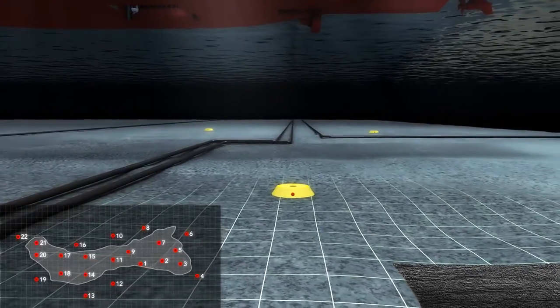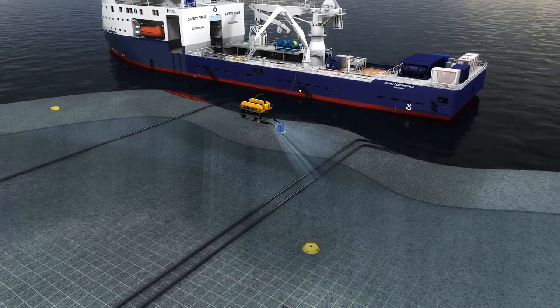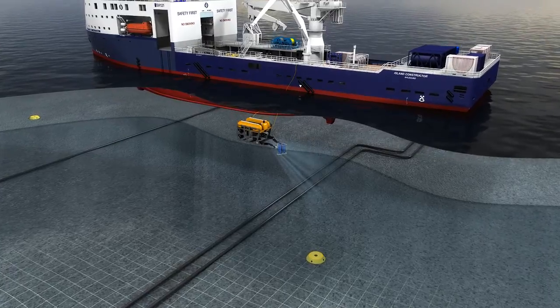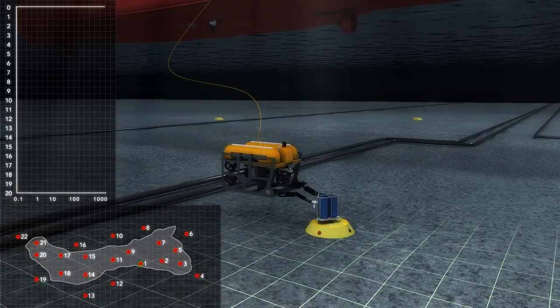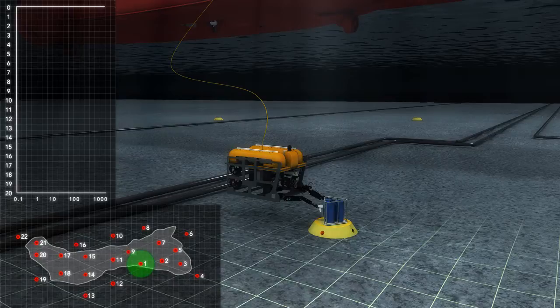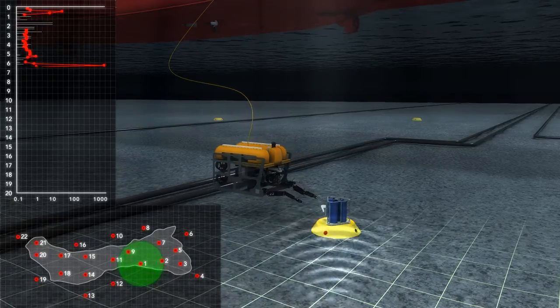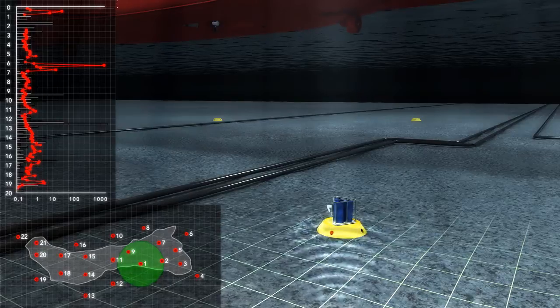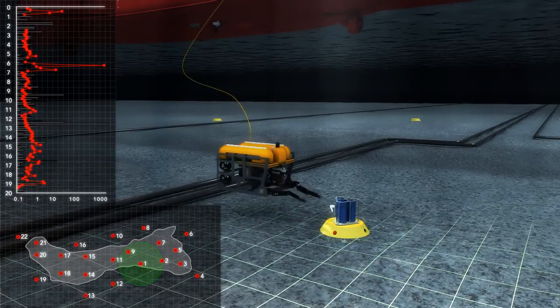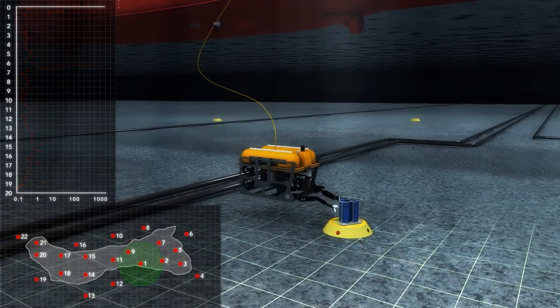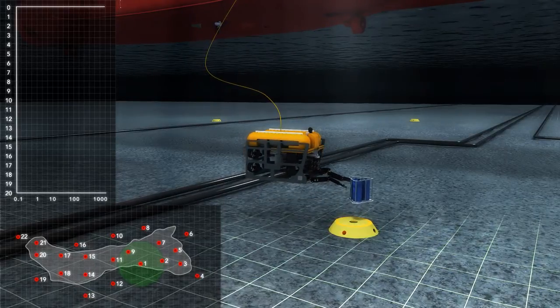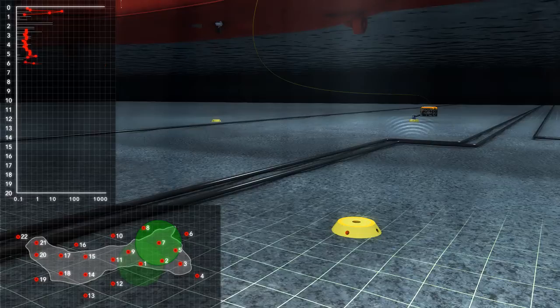The survey is initiated by lowering an ROV with the gravimeter module attached. The ROV places the gravimeter onto the first benchmark. The gravimeter is then left to record gravitational measurements and water pressures for around 20 minutes before it is transported to the next benchmark by the ROV. This process is repeated for each benchmark.